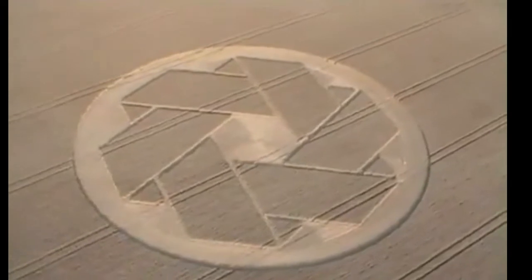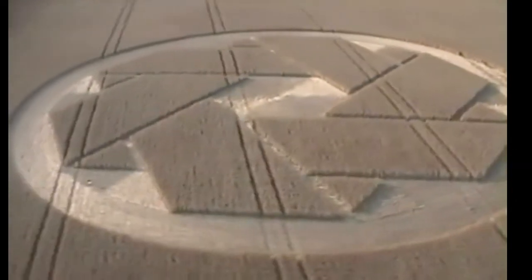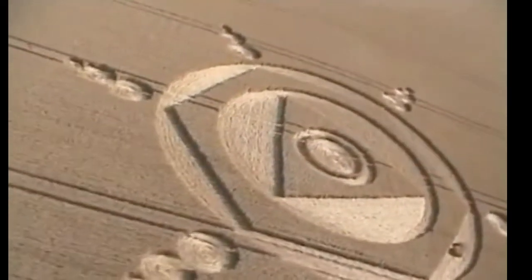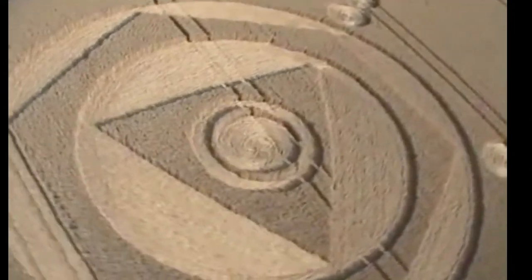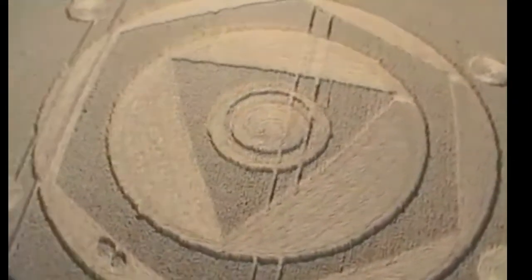And we have been receiving messages, such as crop circles, as we are seeing right now on the screen. We've been receiving messages all over the place. Now, the question is, are these messages from Orion or are they from the Confederation?